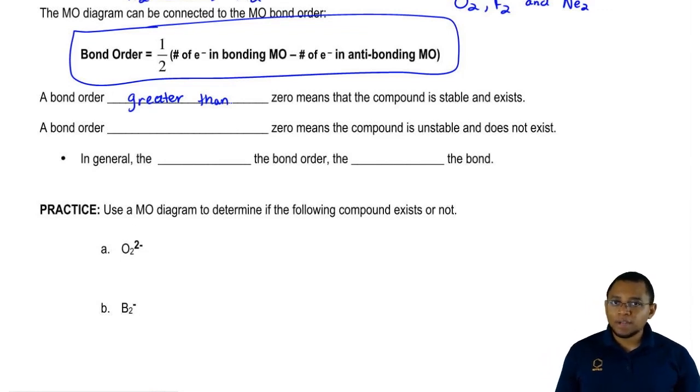Once we write out the electron configuration using our molecular orbital diagrams, we would then use the bonding order formula. If the answer we get is greater than zero, that compound exists.